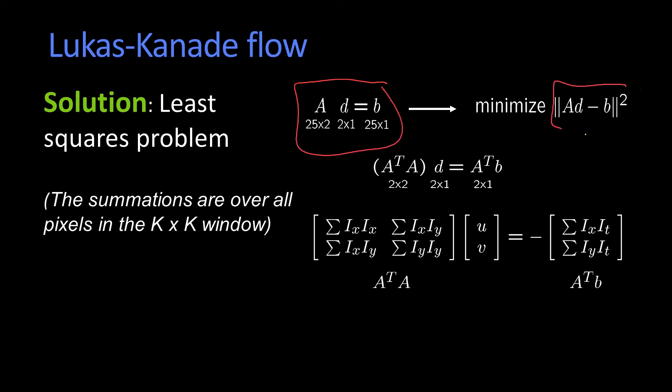When we have an equation like this, we're going to minimize the square difference. And the way you do that is by using the standard pseudo inverse method. So we multiply A by A transpose, and since A is 25 by 2, A transpose is 2 by 25.